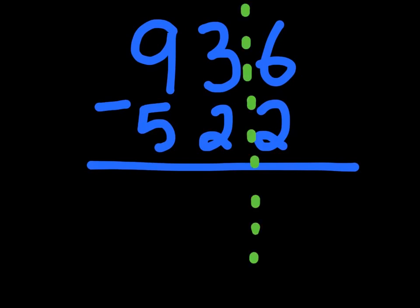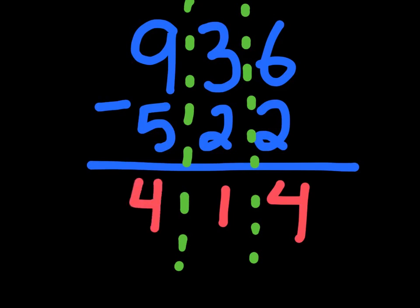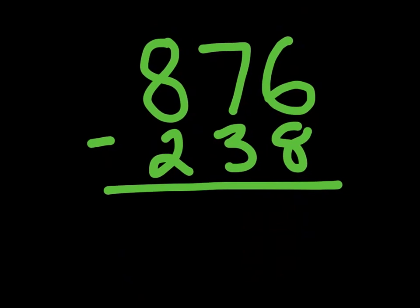Problem two: let's break this up into three columns. Right hand subtraction — six minus two is four. Middle hand subtraction — three minus two is one. Left hand column — nine minus five is four. So our answer to 936 minus 522 is 414. Let's go on to our last question, which requires borrowing.